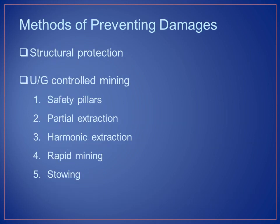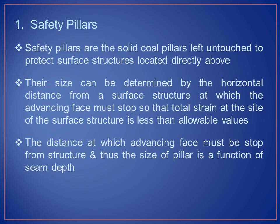Methods of preventing damages: first, structural protection; second, underground controlled mining. Safety pillars are solid coal pillars left untouched to protect surface structures located directly above. Their size is determined by the horizontal distance from the surface structure at which the advancing face must stop so that the total strain at the site is less than allowable values. The size of the pillar is a function of seam depth. Partial extraction protects surface structures using the board-and-pillar method, where some pillars are left unmined below the structure, determined by projecting the area around the structure outward and downward toward the seam.